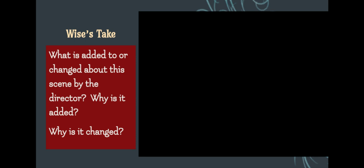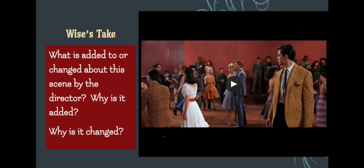Now we will view the version that aligns to Act 1, Scene 5 of West Side Story. As you view this scene, I want you to consider the following as our viewing focus: What did the director change about this scene that was not in the text? Why is it added? Why did he make the changes that he made?